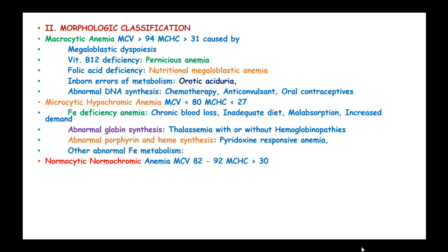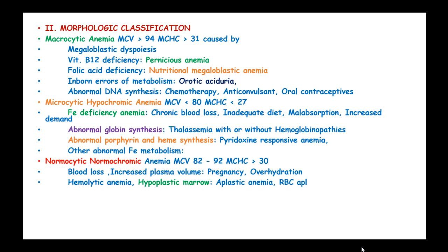Normocytic normochromic anemia has an MCV of 82 to 92 and mean corpuscular hemoglobin concentration of more than 30. This occurs due to blood loss, increased plasma volume, pregnancy, and overhydration. Hemolytic anemias, hyperplastic bone marrow, aplastic anemia, and red cell aplasia can cause normocytic normochromic anemias, as can infiltrative bone marrow conditions like leukemia, multiple myeloma, and myelofibrosis.